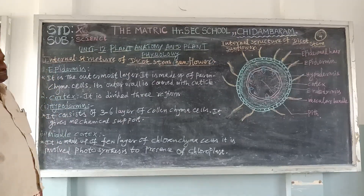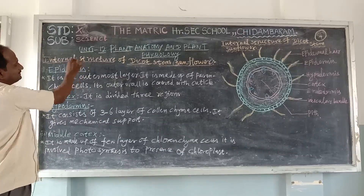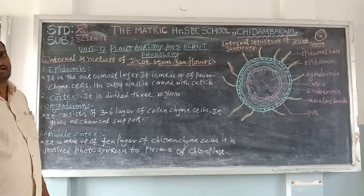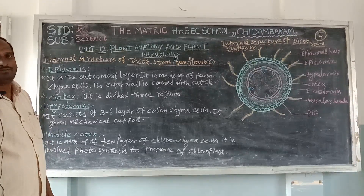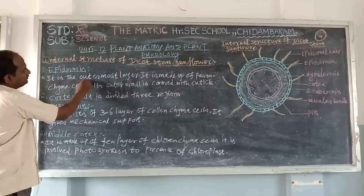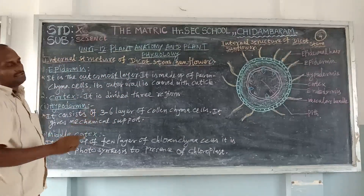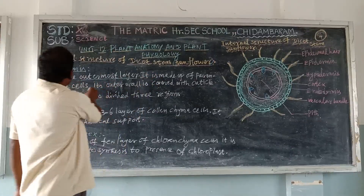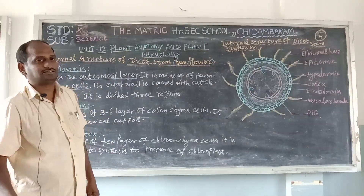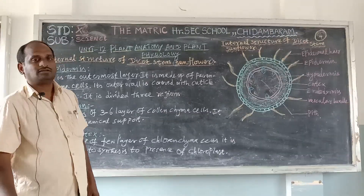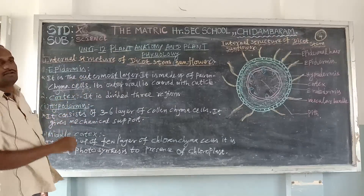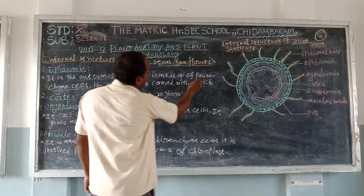The dicot stem has the following parts. First one: epidermis. In every TS of root, TS of stem, and TS of leaf, the outermost layer is epidermis. Epidermis is the outermost layer. It is made up of parenchyma cells. The last class covered three types of cells: parenchyma, collenchyma, and sclerenchyma.